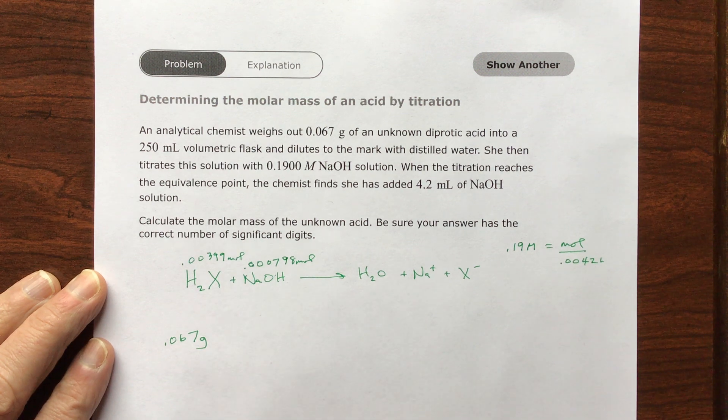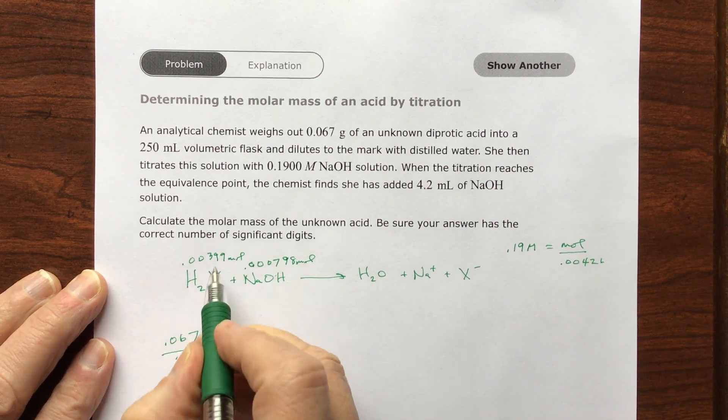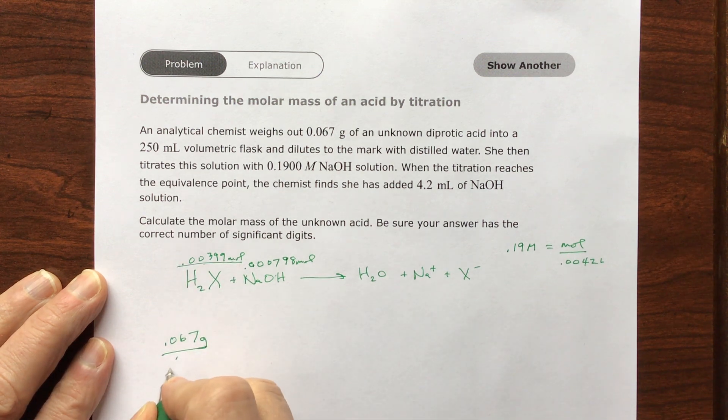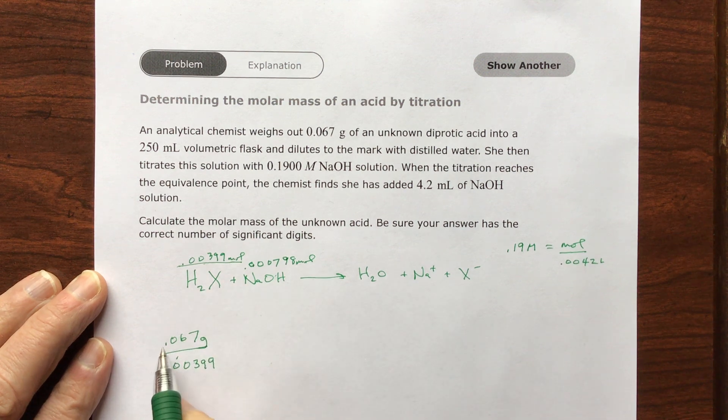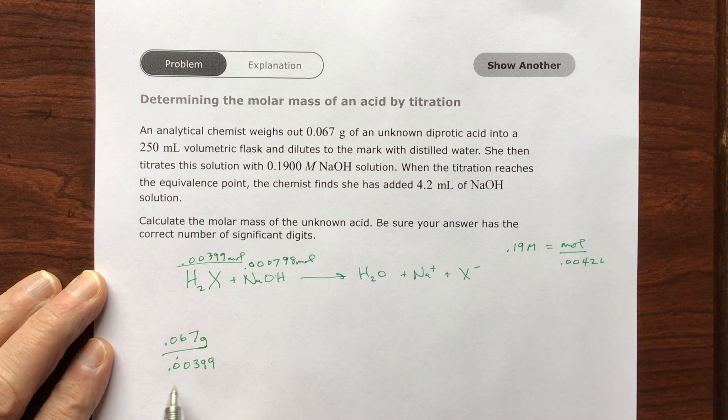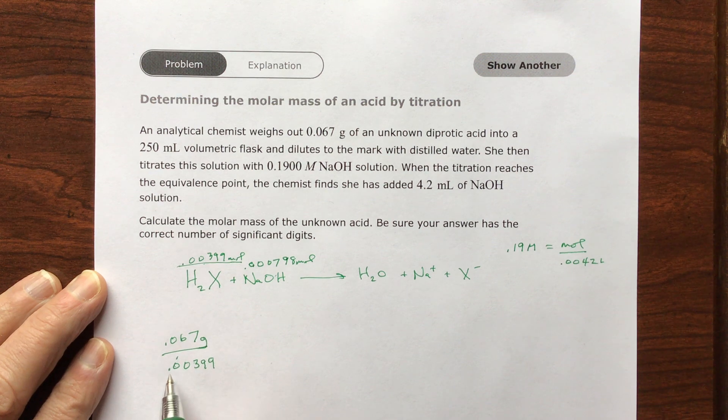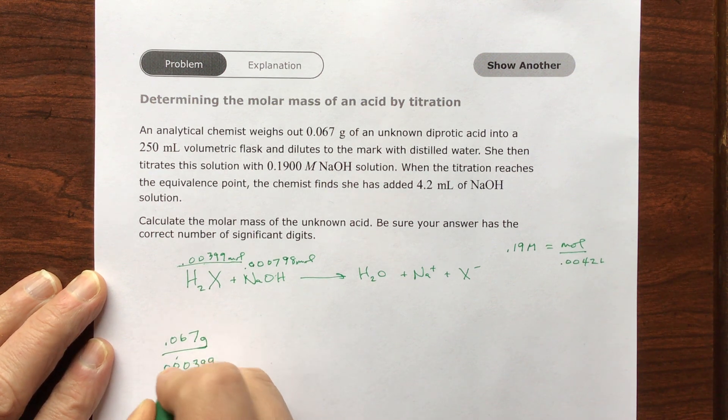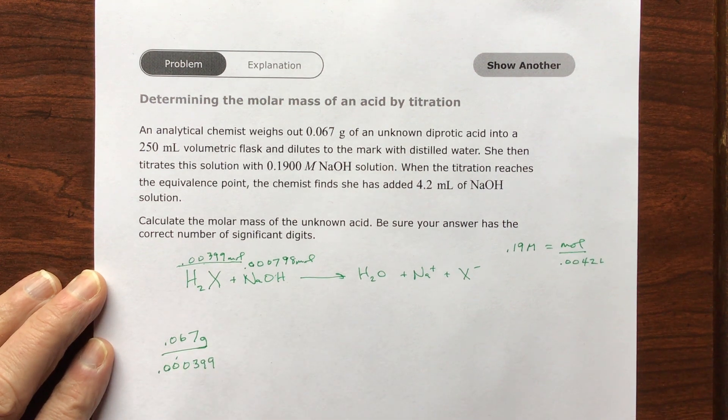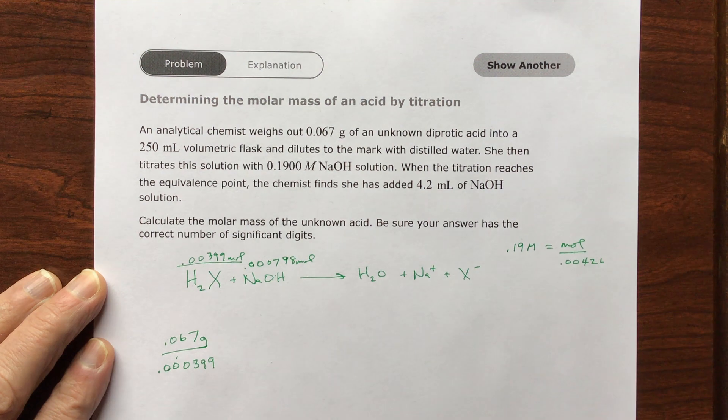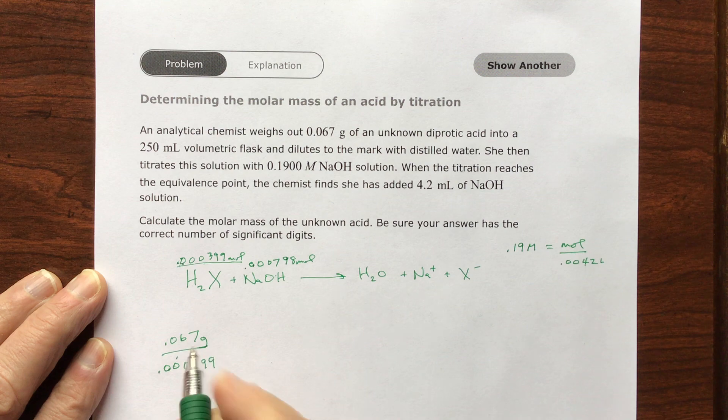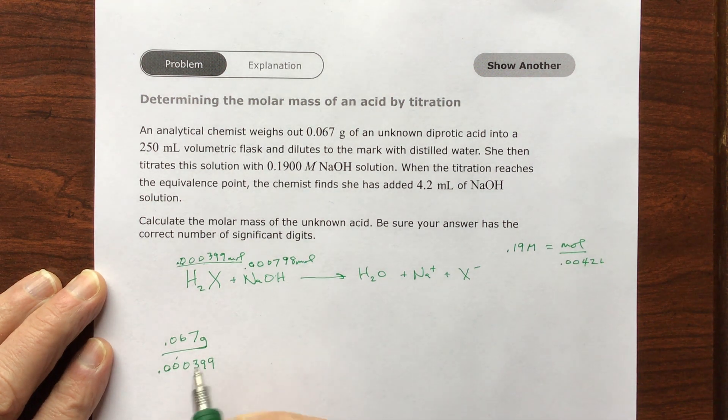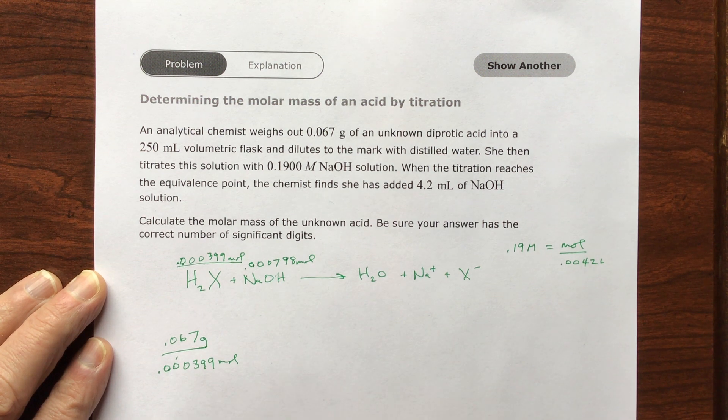Okay, well, what is the molar mass? Your molar mass is going to be grams per mole. Well, I have this many grams and of this many moles, so I'm simply going to make a fraction. I have 0.067 grams of this acid divided by 0.000399 moles. That will give me grams per mole, that is your molar mass.